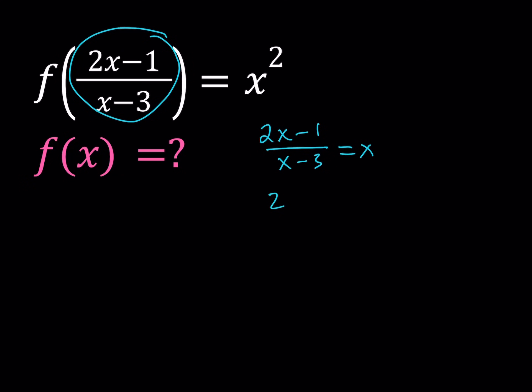Because our goal is to basically make this x, right? So if you do that, you're going to be getting something like 2x minus 1 is equal to x squared minus 3x. From here you're going to be getting a quadratic equation, so on and so forth. But that's not the point.